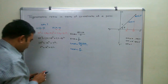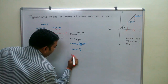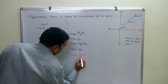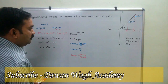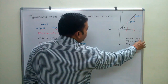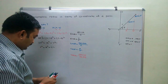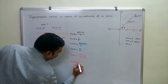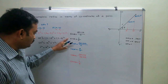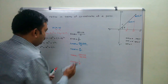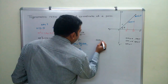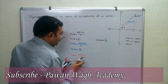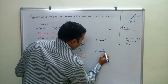Now let us find tan theta. Tan theta is opposite side upon adjacent side. The opposite side is PM, which equals y, and the adjacent side is OM, which equals x. So tan theta equals y upon x. In this way we have found sin, cos, and tan. Since sin theta = y/R, cosec theta will be R upon y. And since cos theta = x/R, sec theta will be R upon x.